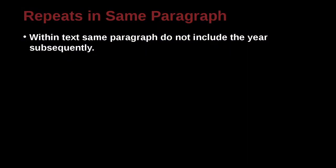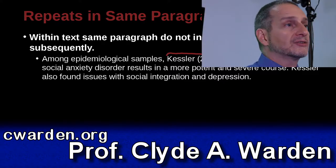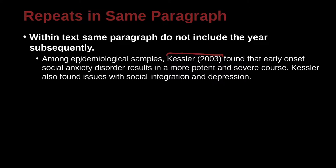Within text of the same paragraph, if we're inside one paragraph and we're going to write a reference again — kind of like repeating the same reference — what do you do? Let's take a look at an example here with Kessler. So here we have a paragraph with two sentences. Among epidemiological samples, Kessler 2003 — so here's our first citation, telling us the person's name and the date — found that early onset social anxiety disorder results in a more potent and severe course.